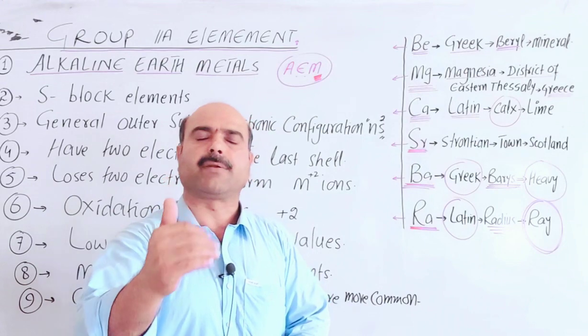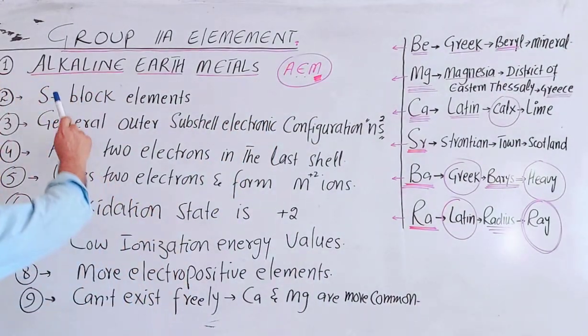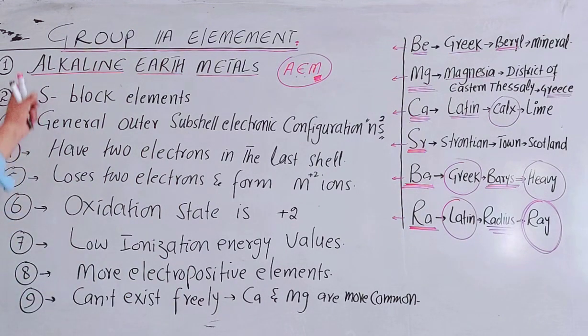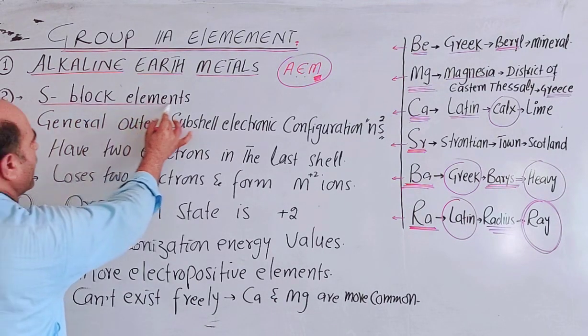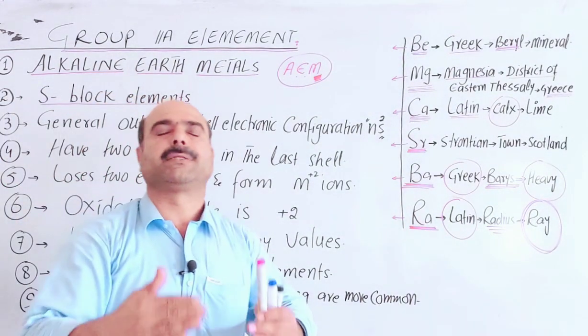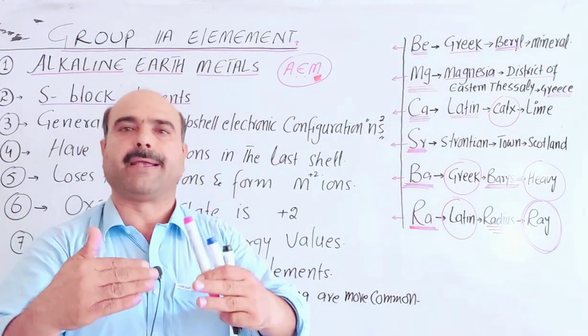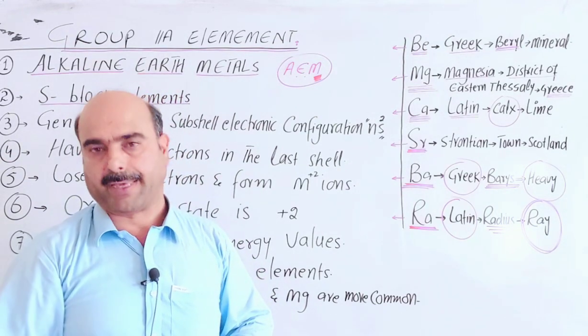Next are the general characteristic properties. The first property is that all alkaline earth metals, group second A elements, are called alkaline earth metals. Next property is that these are S-block elements. What are S-block elements? Elements in which the last electron enters into S sub-shell during electronic configuration.